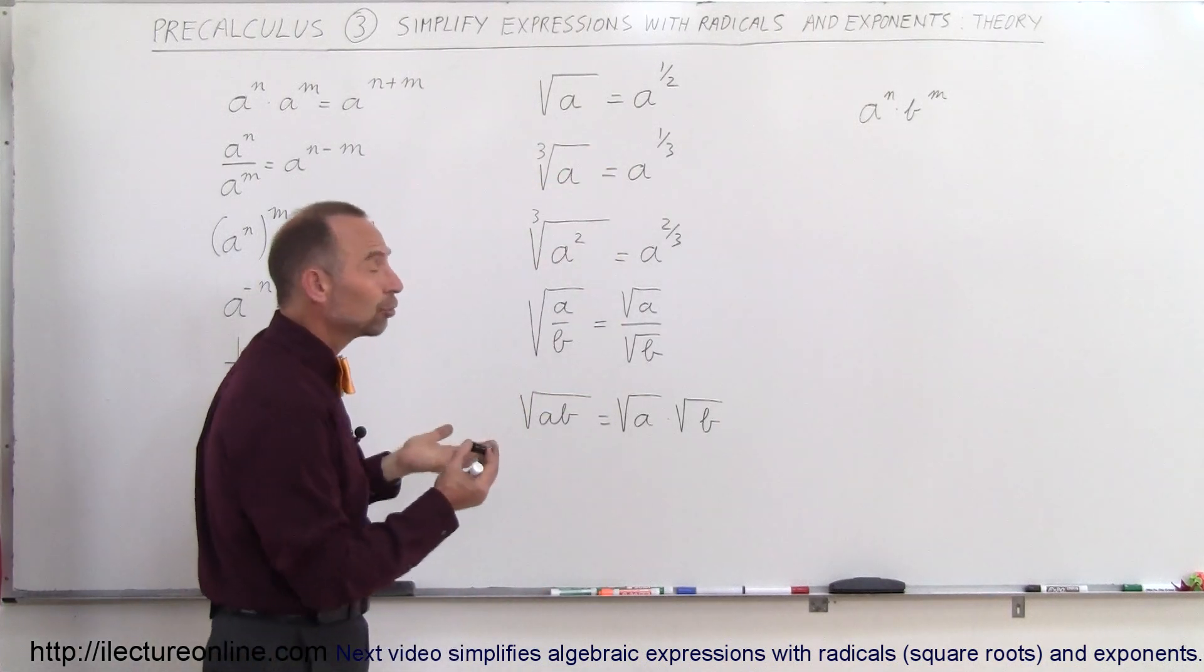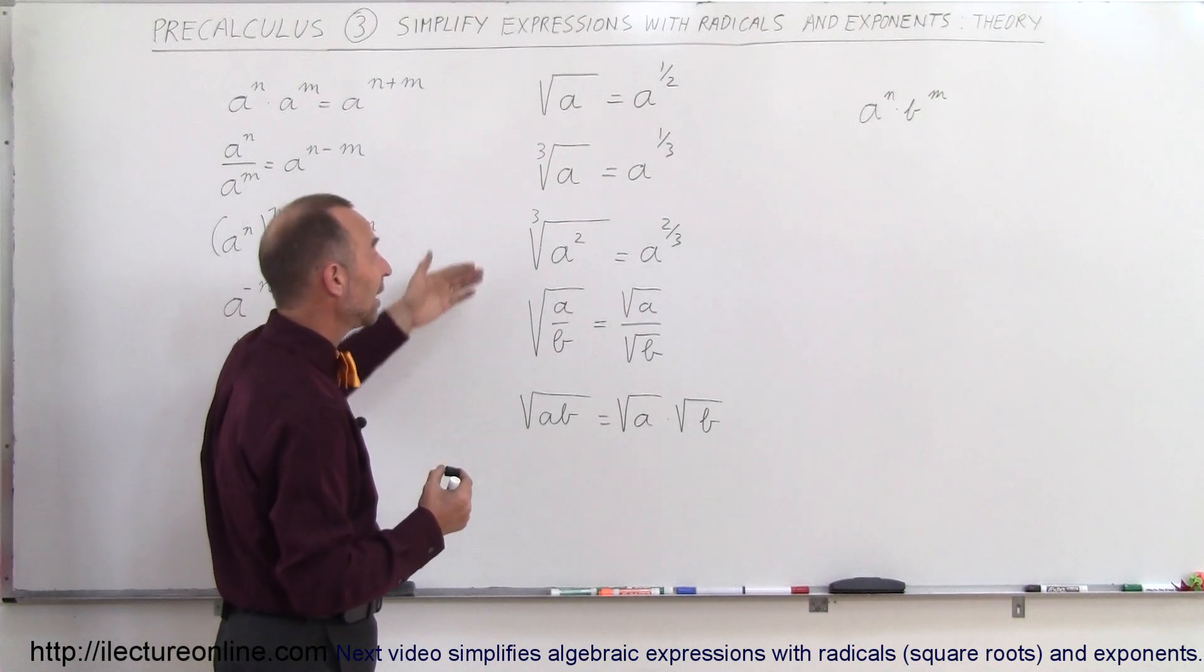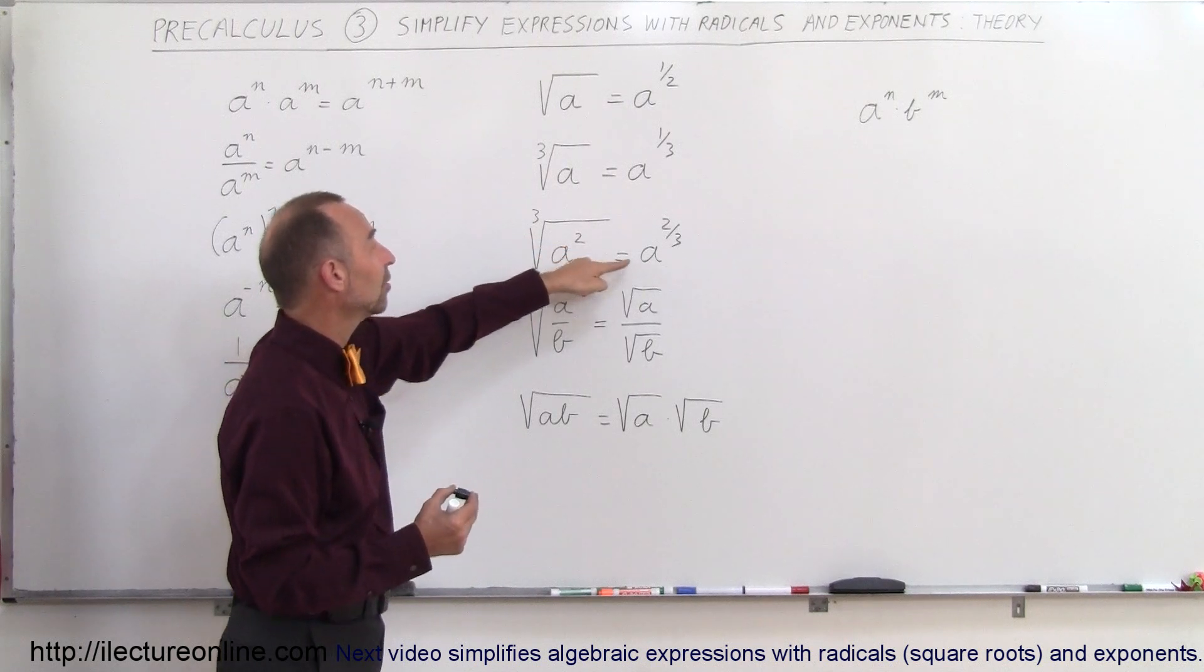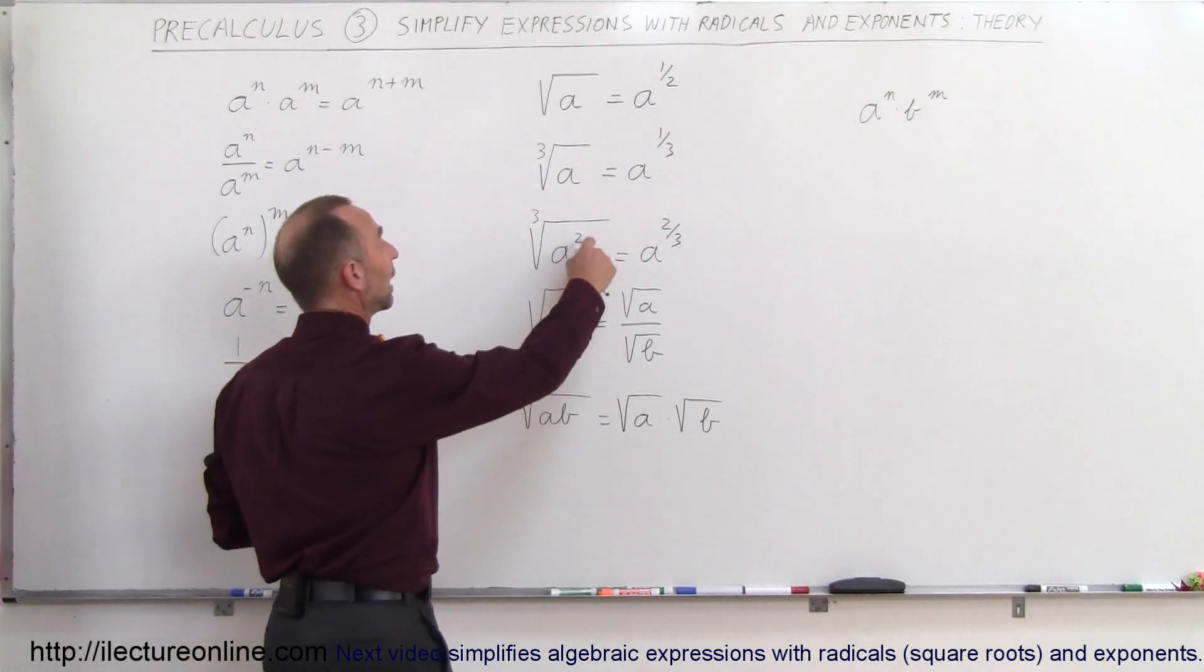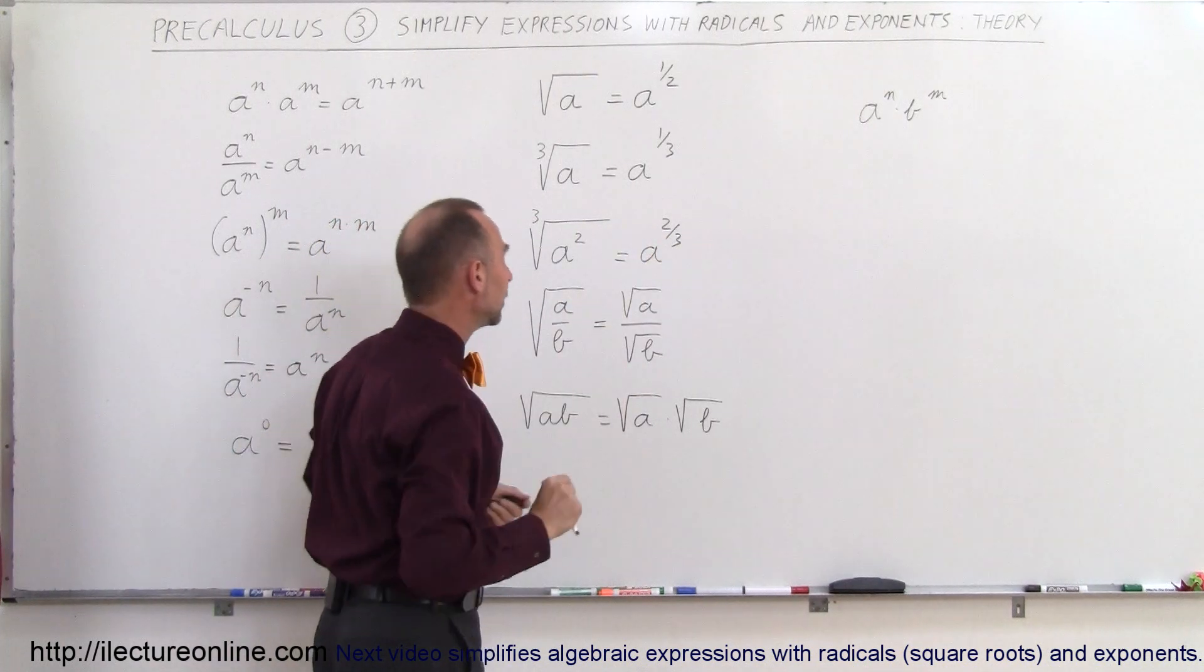Square roots, cube roots, fourth roots, and so forth are simply fractional exponents. If we take the cube root of A squared, that can be written as A to the 2 thirds power. So the exponent goes into the numerator, and the root goes into the denominator.